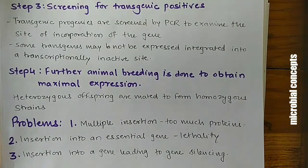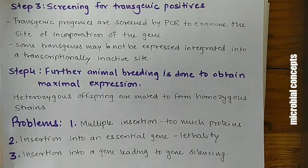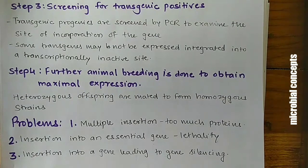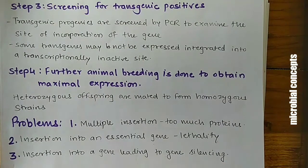The third step is screening for transgenic positives. Transgenic progenies are screened by PCR to examine the site of incorporation of the gene, since some transgenes may not be expressed if integrated into a transcriptionally inactive site. The fourth step is animal breeding to obtain maximal expression — heterozygous offspring are mated to form homozygous strains.